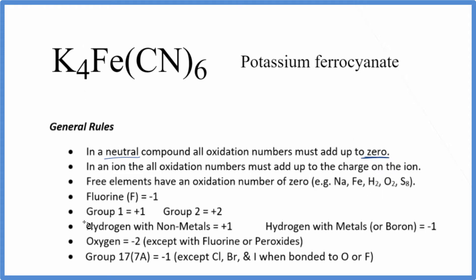Next, we note that potassium is in group one on the periodic table. It'll have a plus one. Each one of these potassium atoms has a plus one oxidation number. The iron, we don't know. That's a transition metal. We're going to call that X.